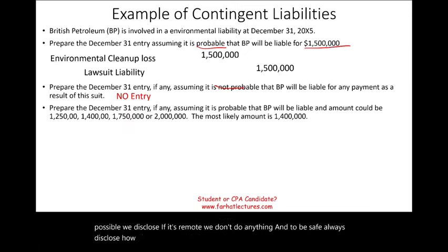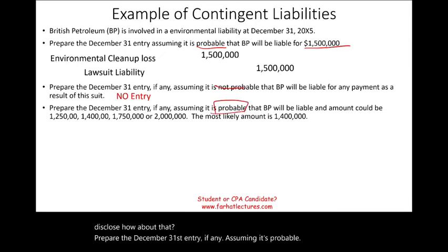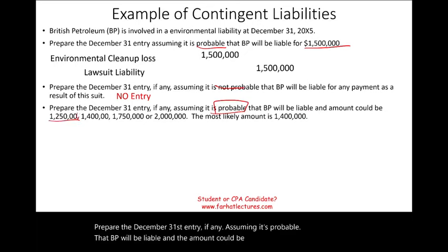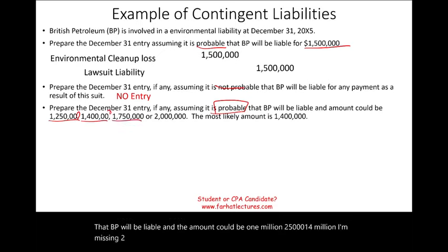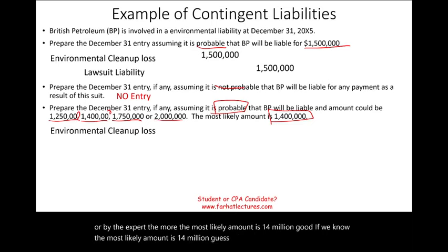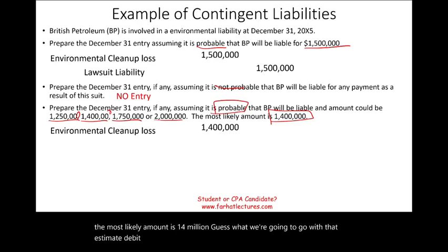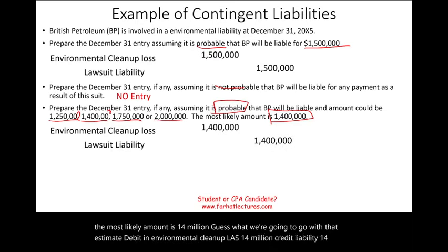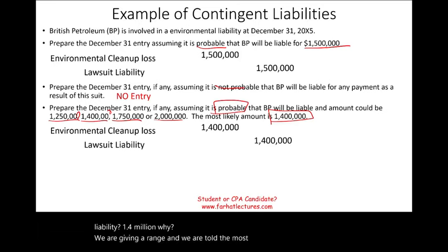Next example: prepare the December 31st entry assuming it's probable that BP will be liable and the amount could be $1,250,000, $1,400,000, $1,750,000, or $2,000,000 — and we are told the most likely amount is $1.4 million. Since we know the most likely amount, we go with that estimate: debit environmental cleanup loss $1.4 million, credit liability $1.4 million.